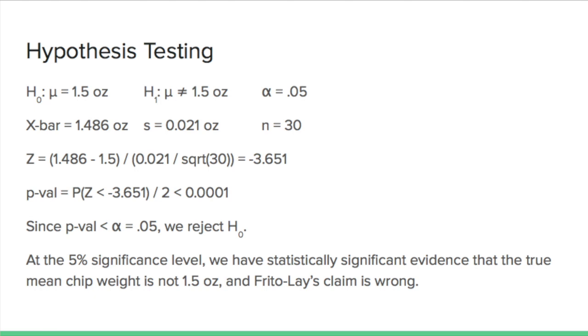So our null hypothesis is that the mean chip bag weight is equal to 1.5 ounces. The alternative is that the mean weight is not equal to 1.5 ounces. And the sample average was 1.486 ounces with a sample standard deviation of 0.021 ounces. The sample size was 30 bags.